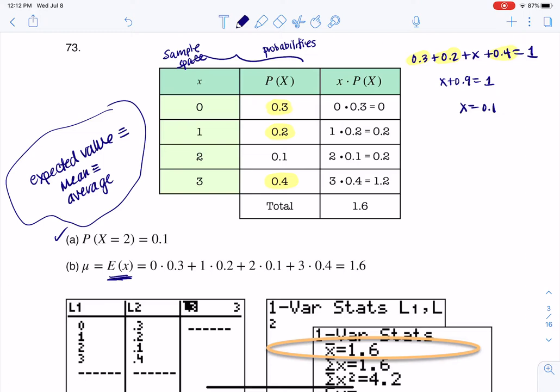you take these little products, you do the value of the variable times its probability. So you see me doing 0 times 0.3, 1 times 0.2, 2 times 0.1, 3 times 0.4. And then you total all of those out, and you could get to 1.6. And that's fun.